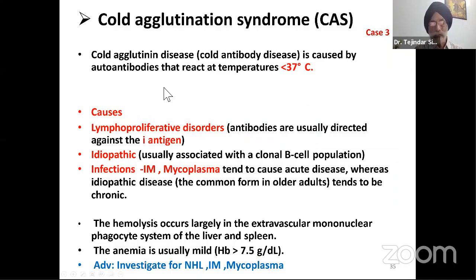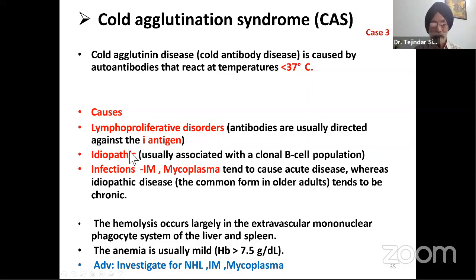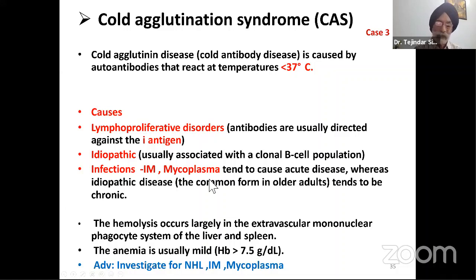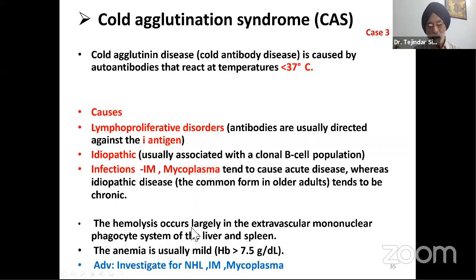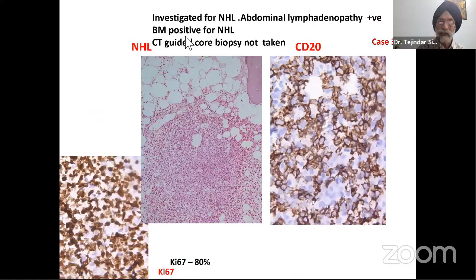Cold agglutinin syndrome is caused by autoantibodies that react at temperatures less than 37°C. Causes include lymphoproliferative disorders (mainly lymphomas), idiopathic cases associated with clonal B-cell population, and infections like infectious mononucleosis and mycoplasma. There is secretion of IgM; the red cells combine with IgM forming agglutinates and resulting in anemia. Hemolysis is both extravascular and intravascular. To confirm the diagnosis, check the Coombs test, and investigate the patient for NHL, infectious mononucleosis, and mycoplasma.